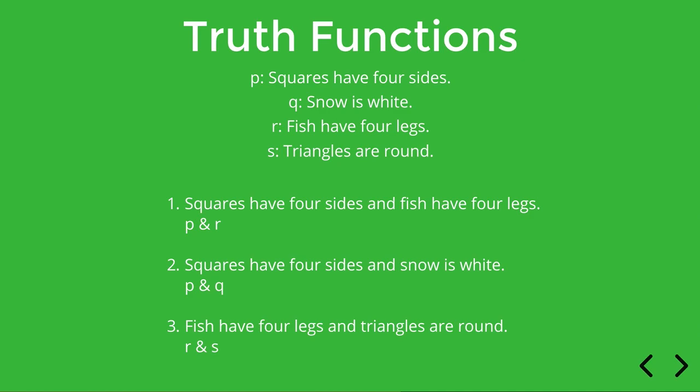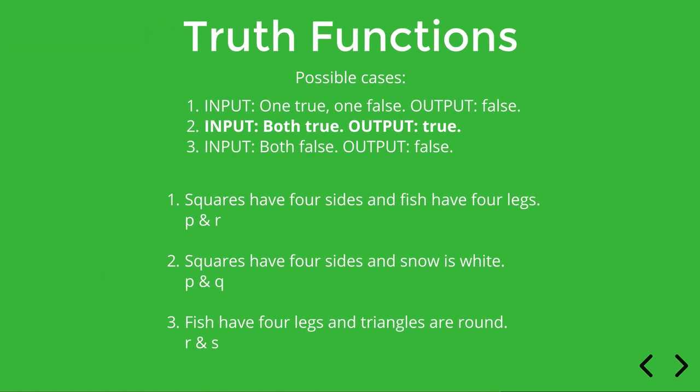So we can learn from these examples exactly under what conditions using a conjunction or ampersand will result in a true sentence: just in those cases where both of the sentences that are being combined with AND are individually true. Essentially what we've just done is enumerated all the possible input and output conditions for the truth function. And the important thing to note is that although syntactically AND combines two individual sentences, as a truth function the input values are really just the truth values of the input sentences, not their content or what the subject matter happens to be.